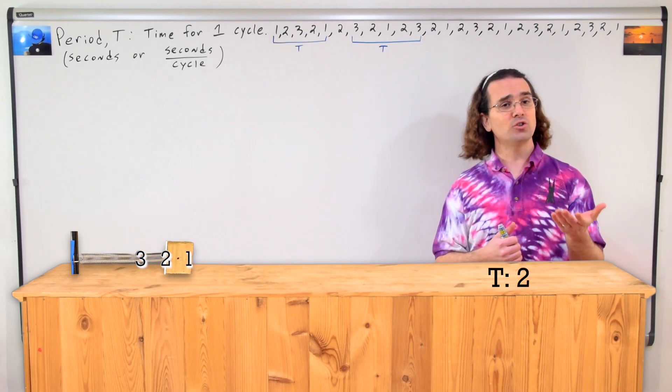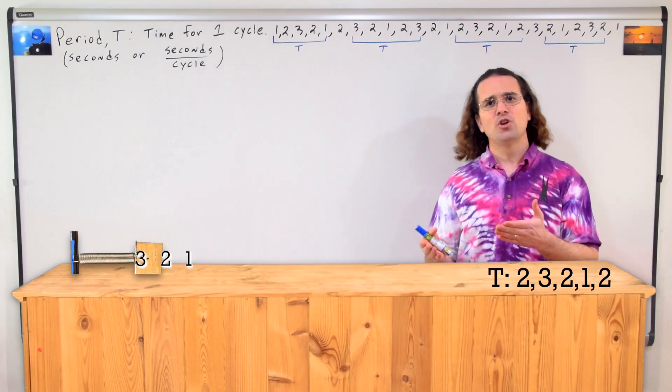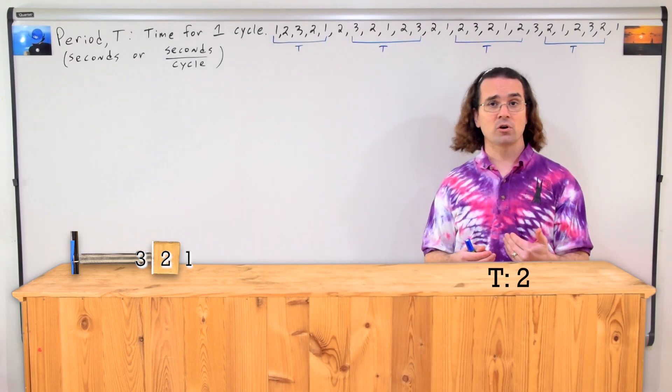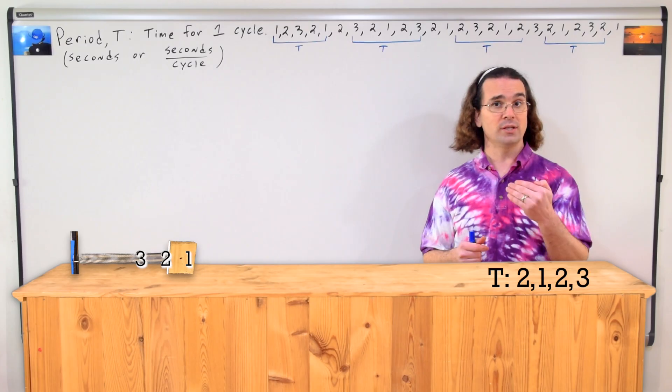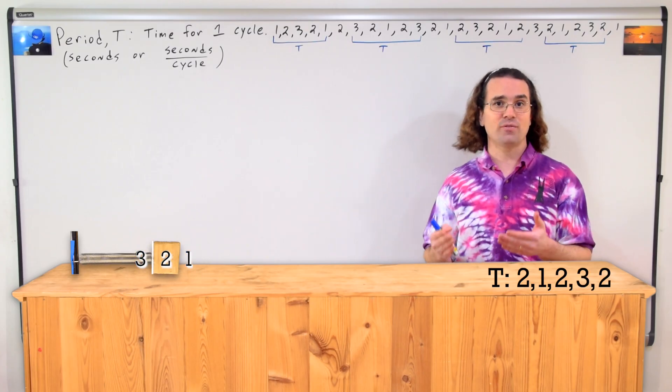Anish, if the object starts out at position 2, please describe one full cycle. If it starts at 2, well, which way is it going? That's a good question. Let's have it moving toward position 3. Then it would go 2, 3, 2, and then it needs to keep going to 1 and then back to 2 for one full cycle. Very nice. Notice if it were going the other way, the order would be 2, 1, 2, 3, 2 for one full cycle, and the period would be how long it takes for that to occur.